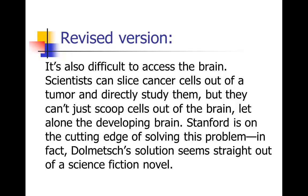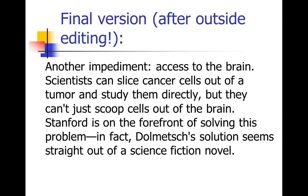The revised version: 'It's also difficult to access the brain.' Notice I still didn't get rid of the 'it is.' 'Scientists can slice cancer cells out of a tumor and directly study them, but they can't just scoop cells out of the brain, let alone the developing brain. Stanford is on the cutting edge of solving this problem. In fact, Dolmetsch's solution seems straight out of a science fiction novel.' Notice I got some great verbs in there — slice and scoop — and I cut some extra words, so now it's much more succinct. That's the version I sent to my editor, who revised it even a little more. Here's the version that actually got printed: 'Another impediment: access to the brain. Scientists can slice cancer cells out of a tumor and study them directly, but they can't just scoop cells out of the brain. Stanford is on the forefront of solving this problem. In fact, Dolmetsch's solution seems straight out of a science fiction novel.' You can see that's even more clear and elegant — this went through multiple rounds of revision to get that way.